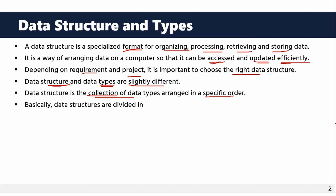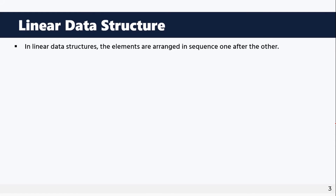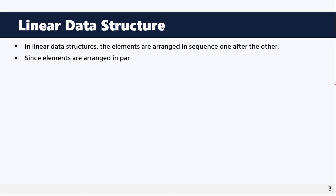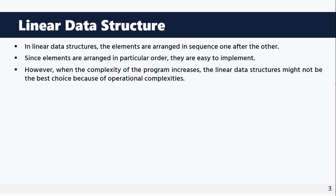The data structure is divided into two categories: linear data structure and non-linear data structure. In a linear data structure, the elements are arranged in a sequence one after the other. However, when the complexity of the program increases, linear data structures might not be the best choice because of operational complexity.